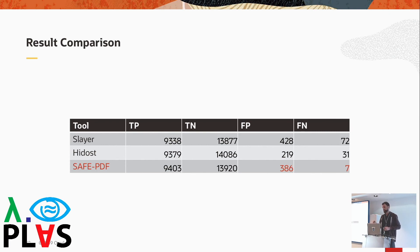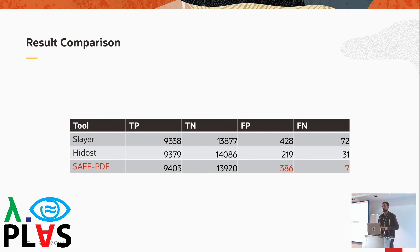Looking at the results in detail, we only have seven false negatives — documents classified as malware by other tools but not by us. We manually inspected all of them and found none contain malicious JavaScript code. We believe these are partly social engineering attacks where JavaScript just pops up a message for the user to download actual malware from elsewhere, or pieces of code that cannot be reached or executed — broken malware that's not actually effective. We found no obfuscation or other methods that defeated our analysis.